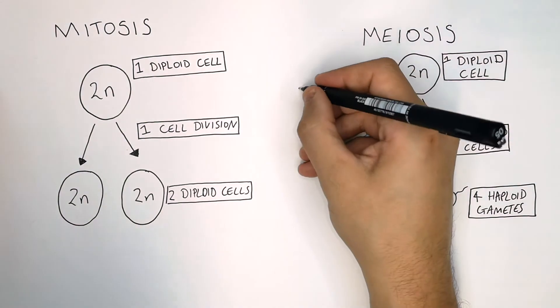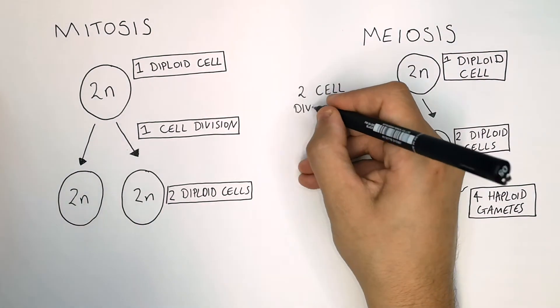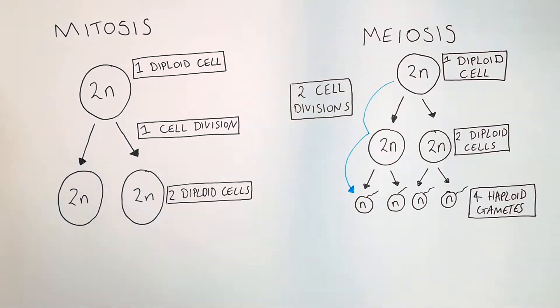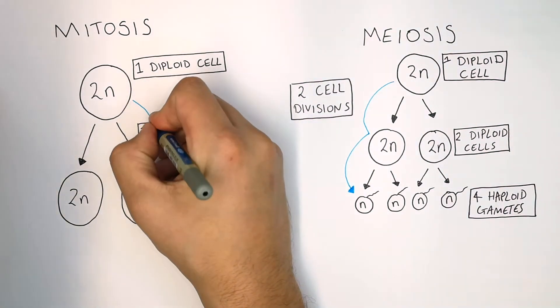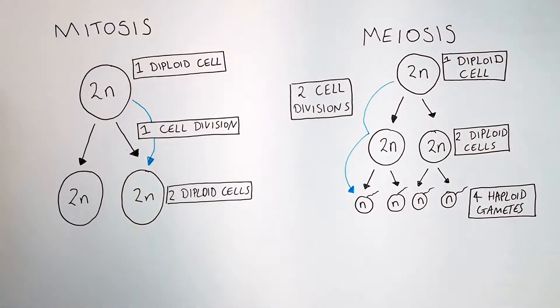There are two cell divisions in meiosis, compared to one cell division in mitosis.